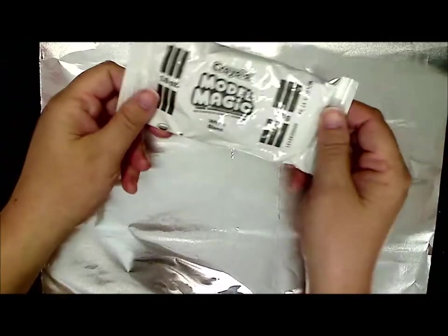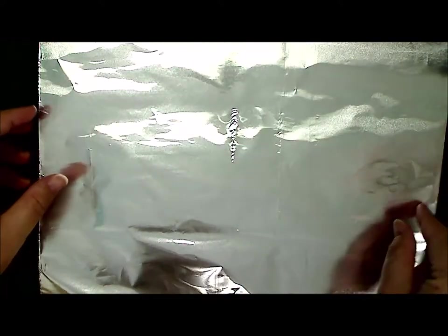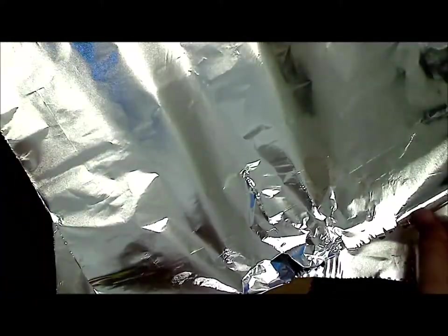So to make Duamutef, I'm going to be using some foil and some Model Magic. The foil is going to be the inside of his face, the Model Magic will go on the outside. I'm going to rip this piece of foil in half first, just in case I don't need all of it.